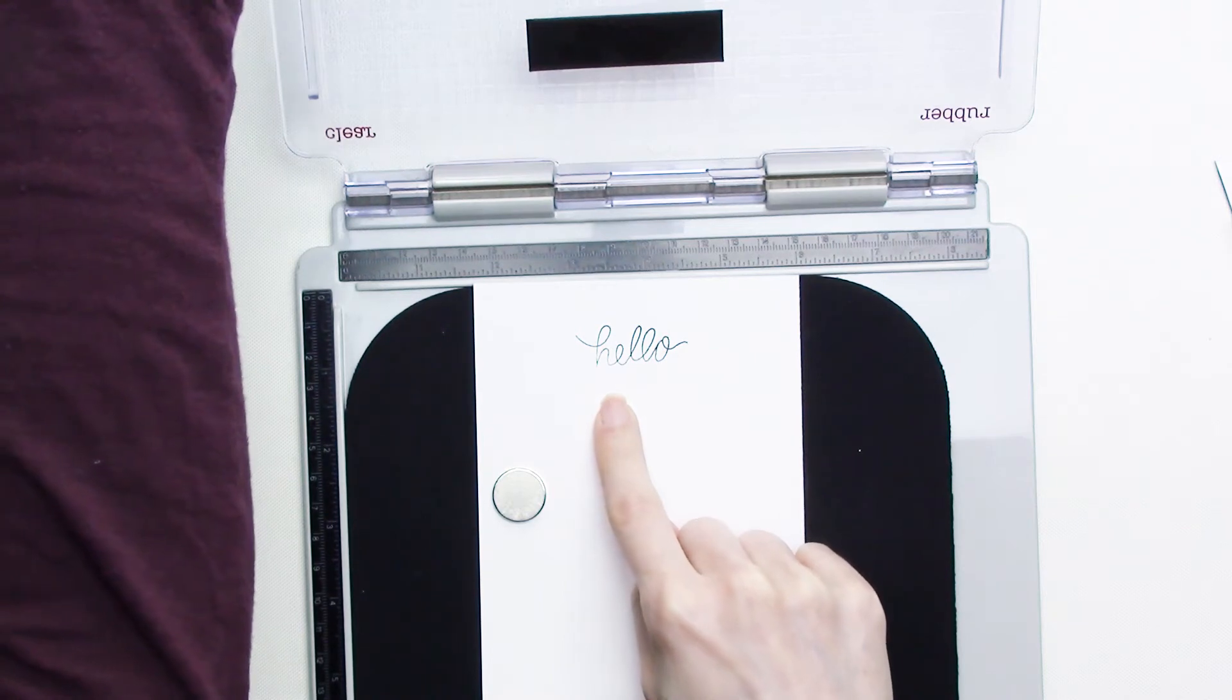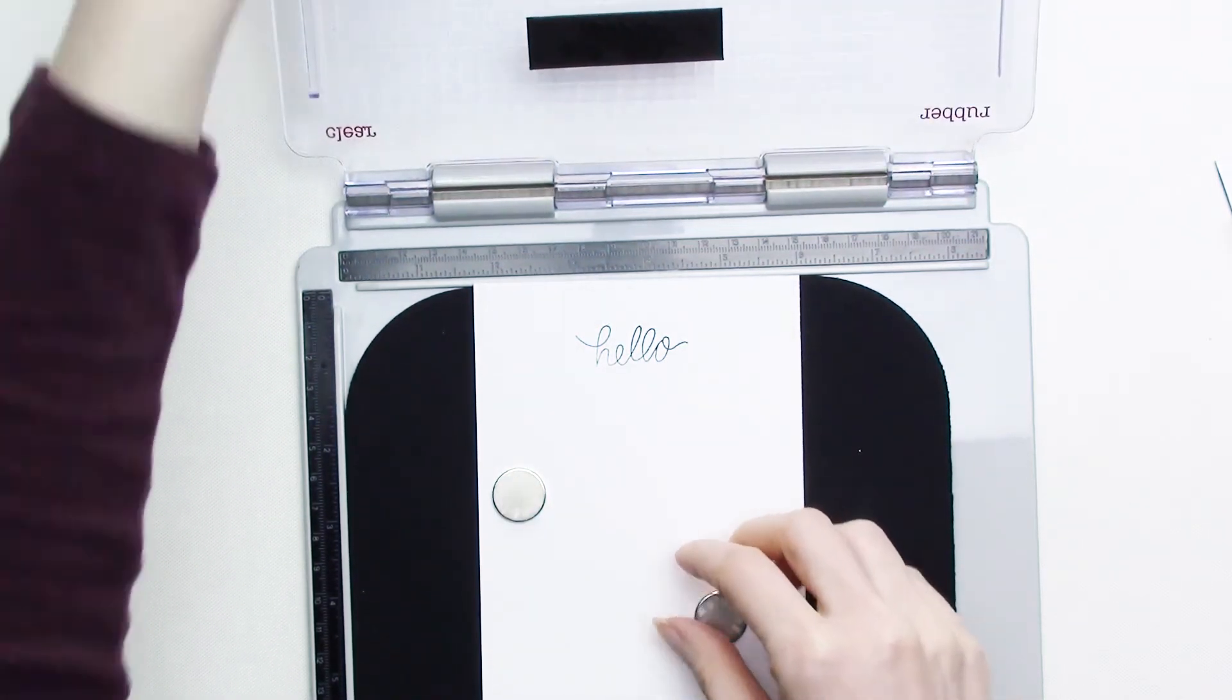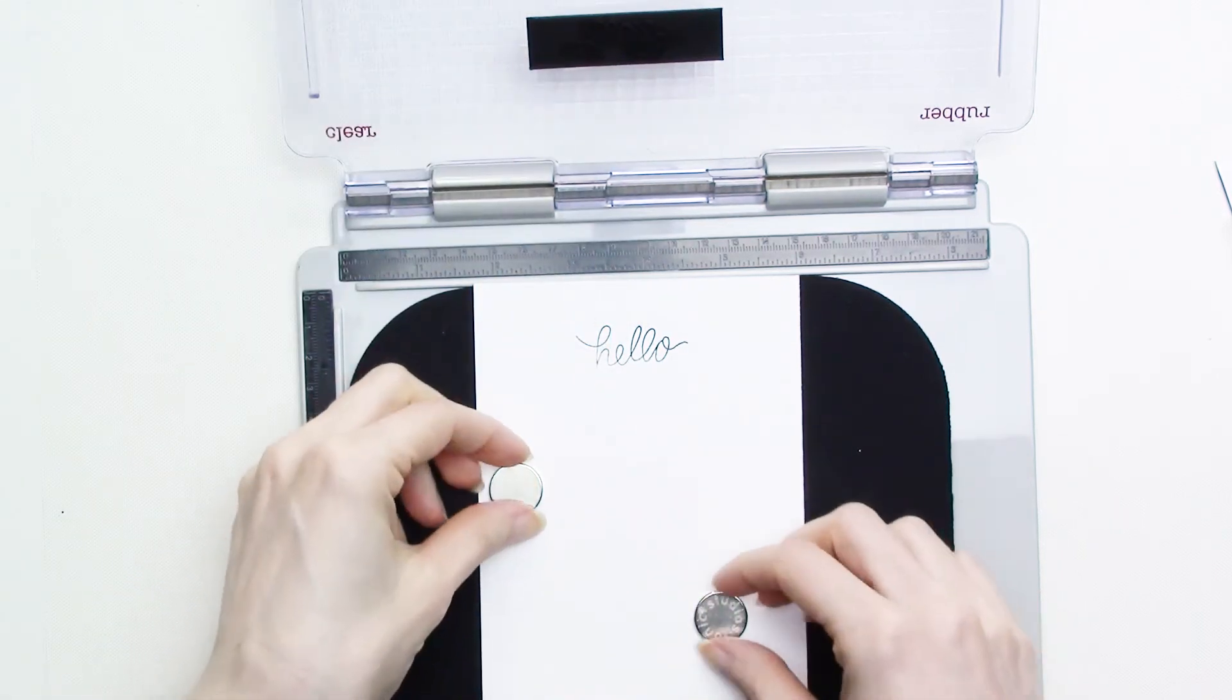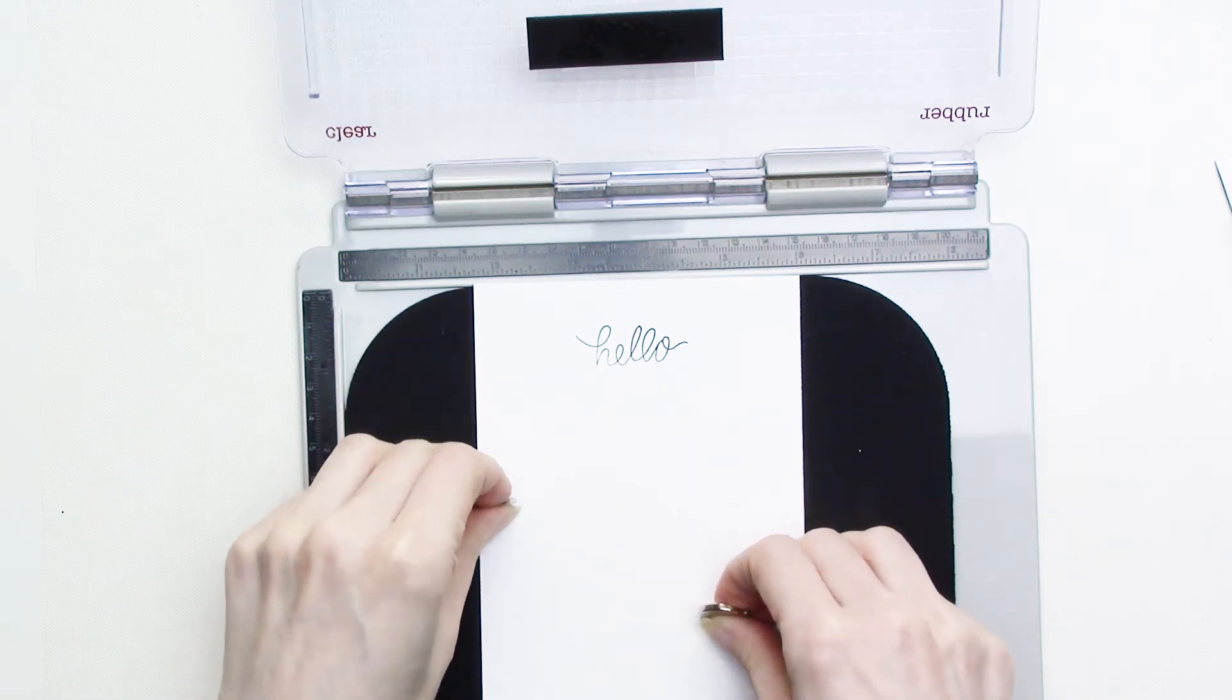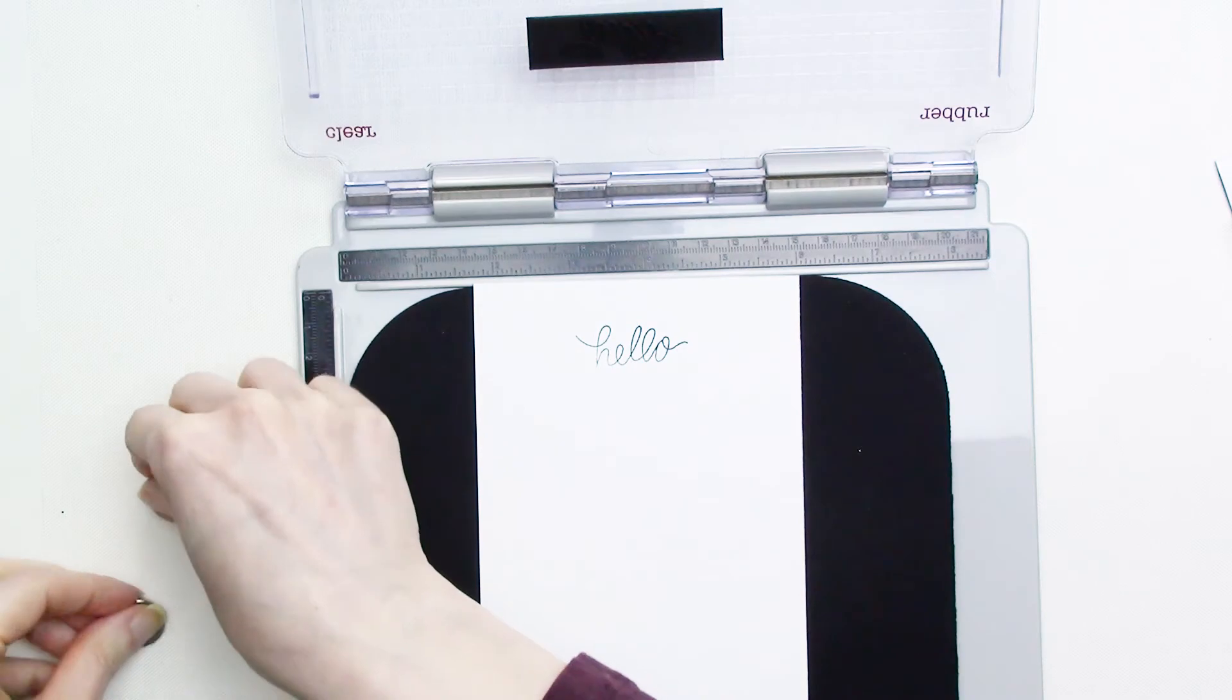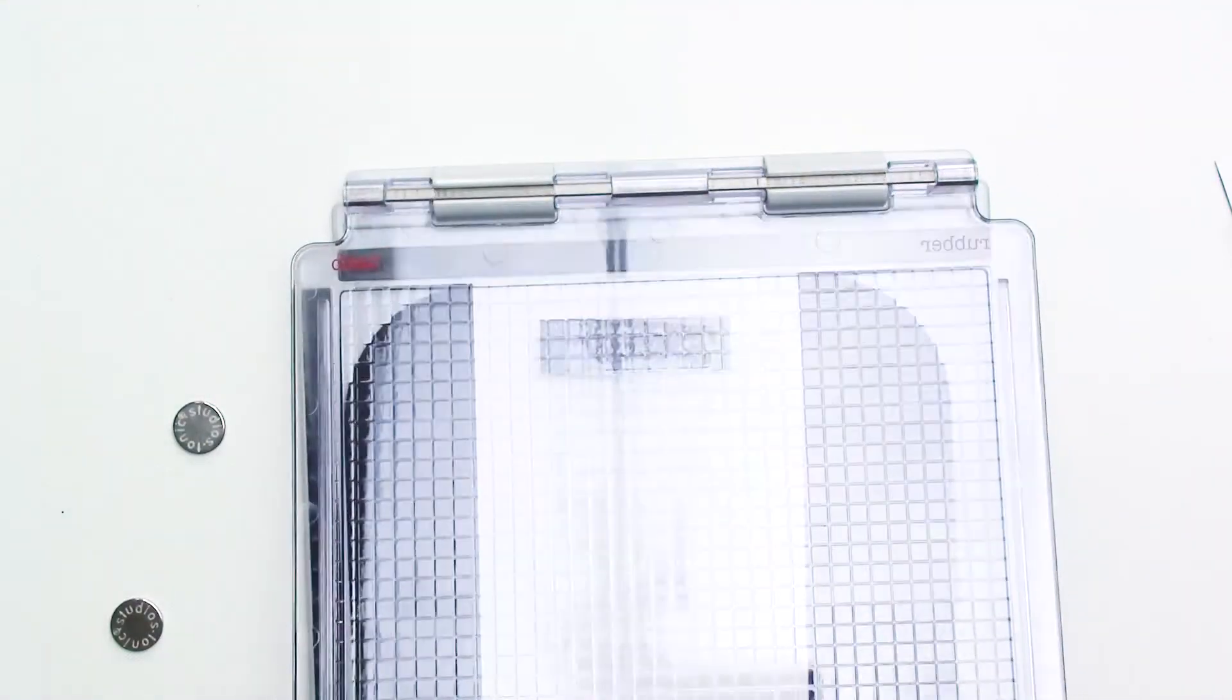This is when I realized that the issue was the magnets. When you use the mint stamps with mounting foam, the magnets don't interfere with the stamped image because they're right on the surface of the platform. But with the mousepad, the entire area is raised toward the lid and the magnets create a gap that doesn't allow the stamp to get close enough to the cardstock surface to get a good impression. So, I'll remove both of the magnets and try again.